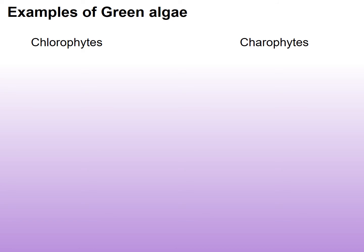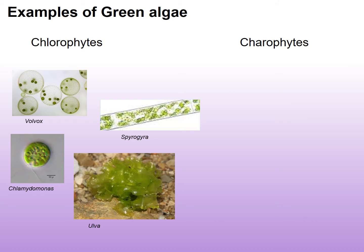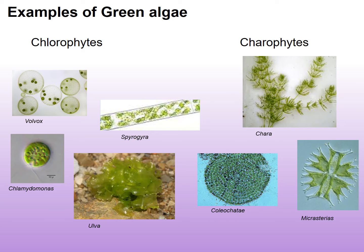Let's look at some examples of green algae. Among the chlorophytes, we have volvox, which is a colonial unicellular organism; spirogyra, also colonial and single-celled; chlamydomonas, which is unicellular; and ulva, which is multicellular. Then we have the charophytes, which look much more like plants. We have chara, then coleochaete, which is more of a colonial type, and then micrasterias. You can see the progression from more unicellular algae to more plant-like multicellular organisms.